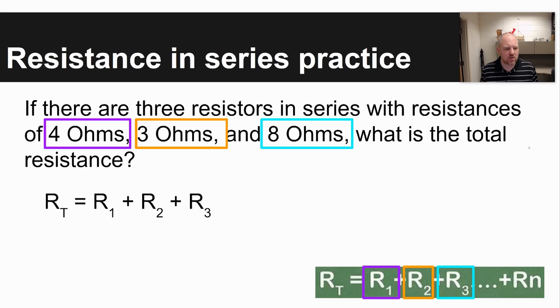You would use the equation R total is equal to R1 plus R2 plus R3. So you take four plus three plus eight to give you a total resistance of 15 ohms.